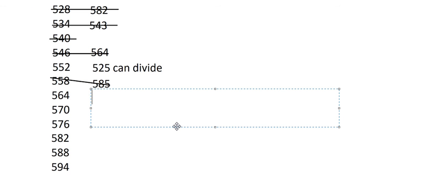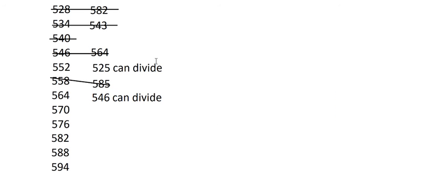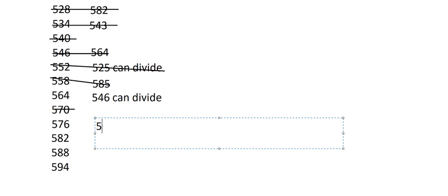564 swapped gives 546 — 546 can divide, but we need to reject this number because it contains the digit 5 in the wrong position. Then 570 — we reject due to the digit 5. Moving to 576, swapped gives 567 — and 567 can divide by 7.